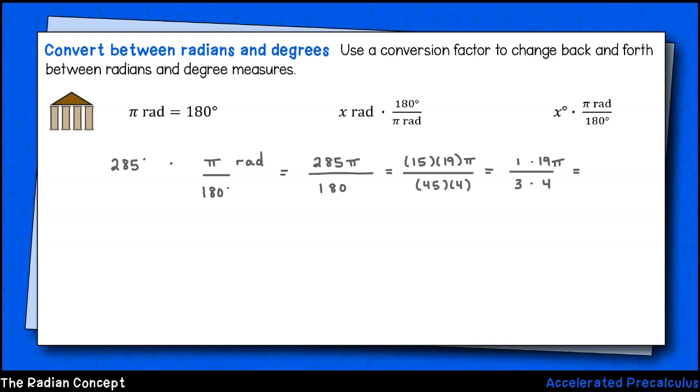In the numerator, we have 1 times 19π, and in the denominator, we have 3 times 4. Altogether, this will be 19 12ths π radians, or 19π over 12 radians. When you encounter an answer like this, leave your answer in terms of π. In other words, don't use any decimals, mixed numbers, or approximations.